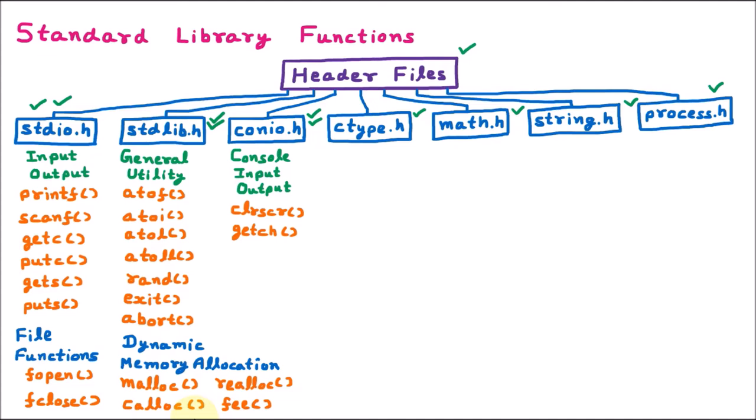The next function is getche, used to get a character from the keyboard and echo it to the output screen. The difference between getch and getche is that in getch we take the character from the keyboard but don't echo it on the output screen, whereas in getche we take the character from the keyboard and echo it on the output screen.